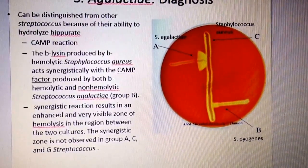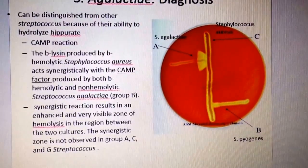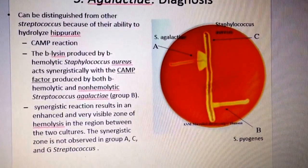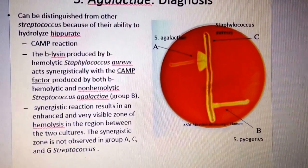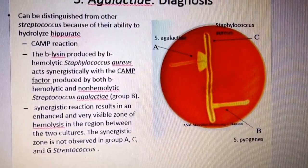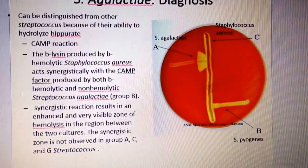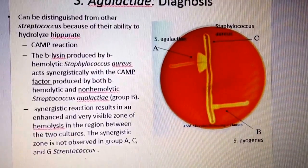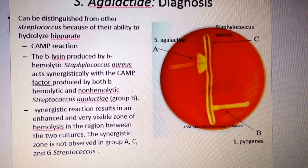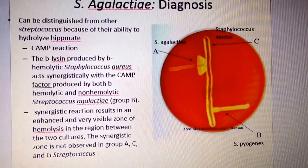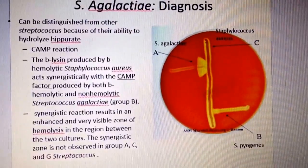The synergistic reaction results in an enhanced, very visible zone of hemolysis in the region between the two cultures. This synergistic zone is not observed in Group A, C, and G — though they appear to mean Group B here — which is Streptococcus agalactiae.